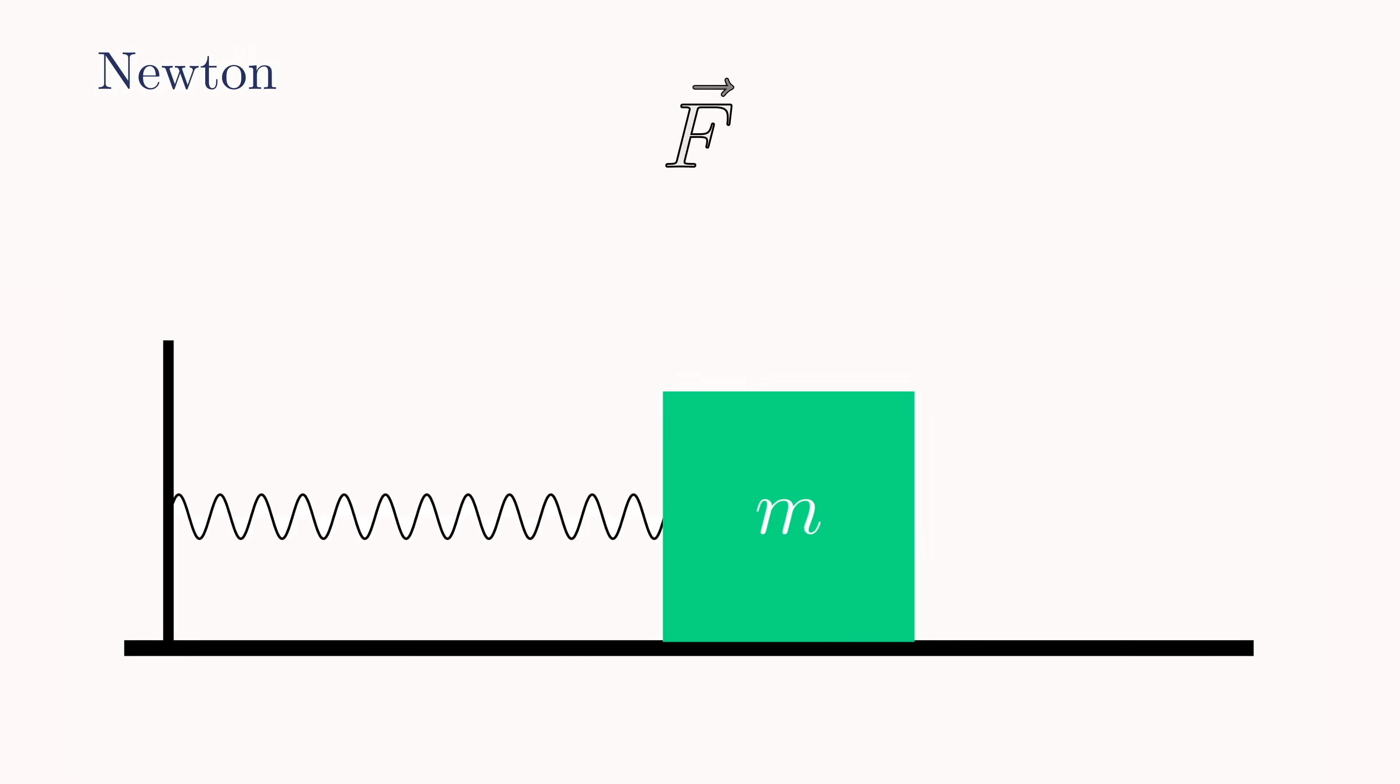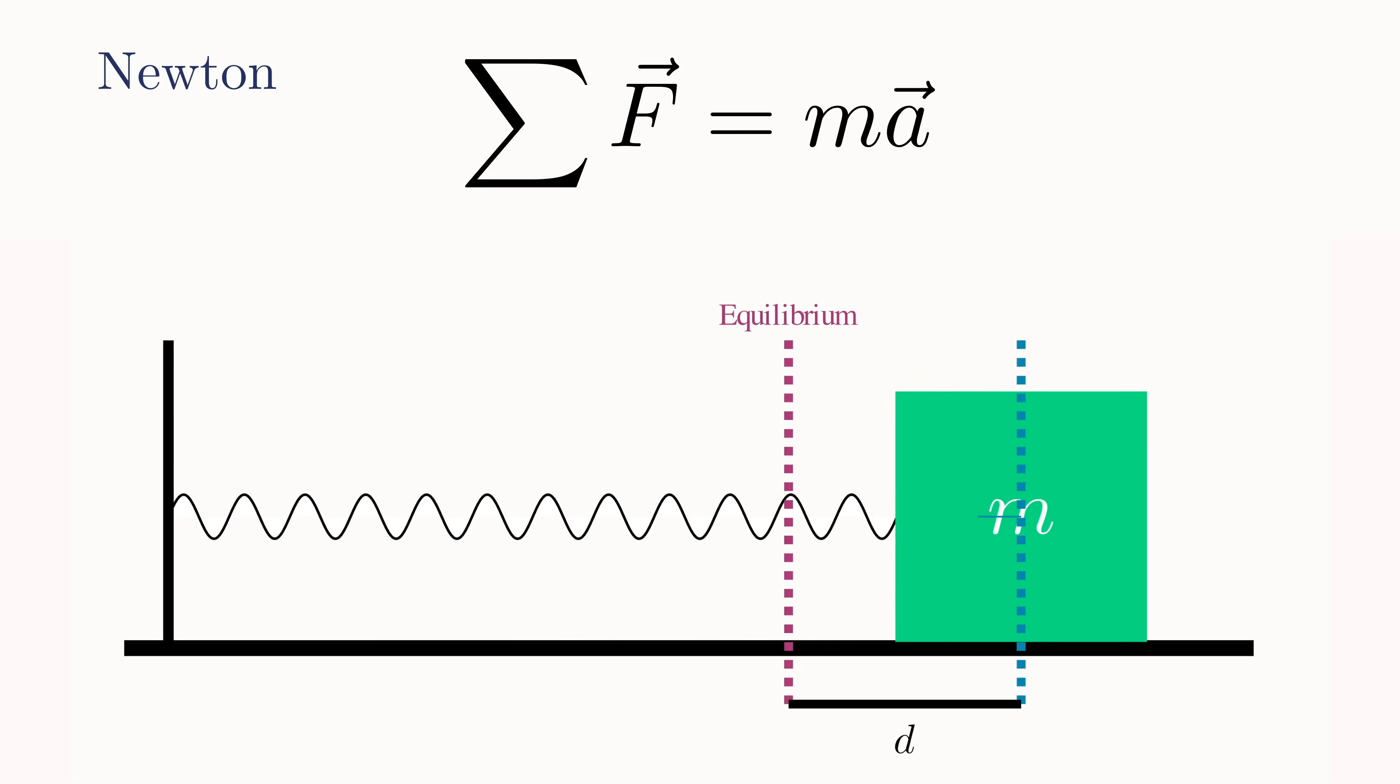According to Newton, the first thing we need to do is to write down all the forces acting on the mass. Then, by Newton's second law, the sum of all the forces must equal ma. The mass begins at equilibrium, so initially there is no net force on it. The downward force from gravity and the upward normal force cancel each other out. If we pull the mass a distance d from the equilibrium position, then the spring exerts a force to the left. Or, if we define a coordinate system, then the force from the spring will be in the negative x-hat direction.